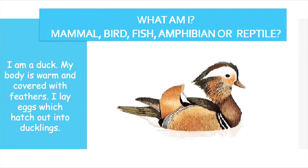I am a duck. My body is warm and covered with feathers. I lay eggs which hatch out into ducklings. The clue here is that it is covered with feathers and lays eggs — so a duck is a bird. Birds are covered with feathers, have a beak, and have wings.